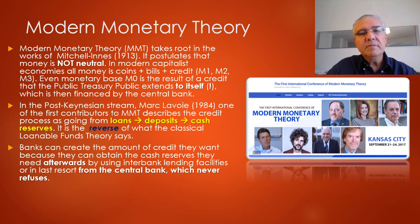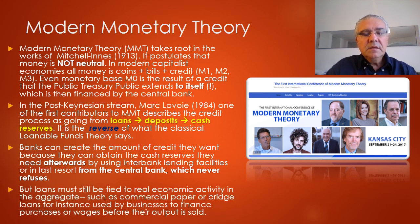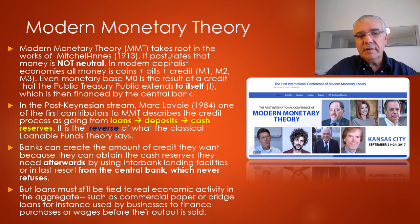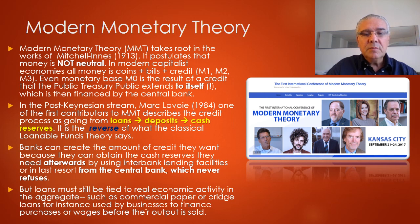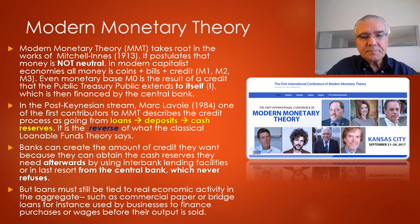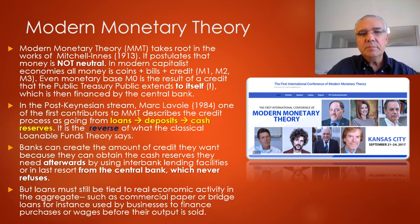It's very, very seldom that the central bank will say no. In the MMT view, loans must still be tied to real economic activity in the aggregate. We've seen this before in the context of the real bills doctrine. Commercial papers or bridge loans, for instance, are backed by real assets, and they're used to finance purchases or wages before the output is sold.